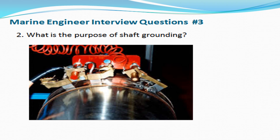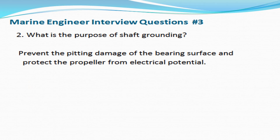The second question: what is the purpose of shaft grounding? The answer is to prevent pitting damage of the bearing surface and protect the propeller from electrical potential. The bearings include intermediate bearings, journal bearings, crank pin bearings, crosshead bearings, and so on.